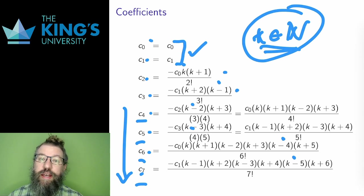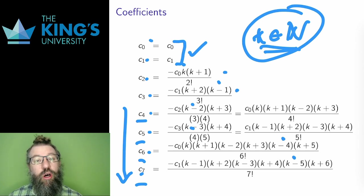This means that for every natural number k, one of the two solutions, either the c0 or the c1 solution, will have a coefficient that, past a certain point, is always 0. Well, that means that the solution isn't a series, it's a polynomial. And this leads to the Legendre polynomials, the special polynomial solutions of the Legendre equation.